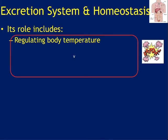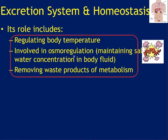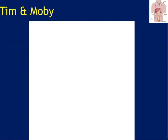Just to remind ourselves: excretion and homeostasis work together in several ways. It regulates our body temperature. It is involved in osmoregulation — maintaining the salt and water concentration in your body fluid. Essentially our excretory system makes sure our salt-water balance is good in our tissue fluid and in our blood. Finally, it removes the waste products of metabolism.